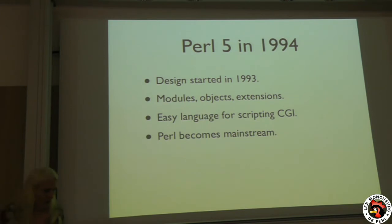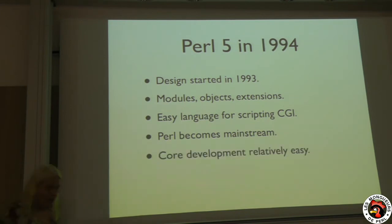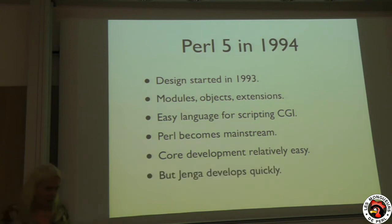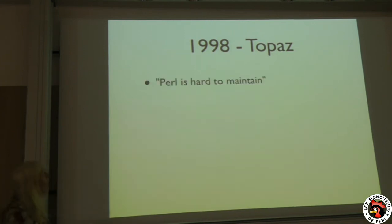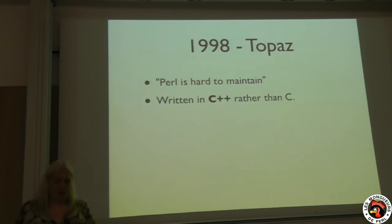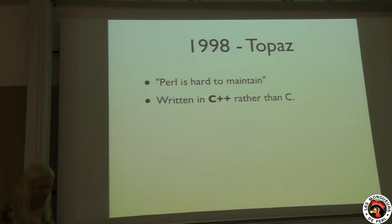Perl 5, in 1994 — actually started in 1993 already. It had all these things like modules, objects, and extensions. It was actually an easy language for scripting CGI, and that's why Perl became mainstream. Core development of it was relatively easy.